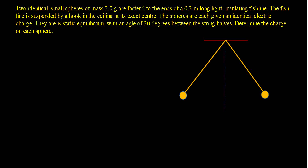In this video I will be solving a question related to Coulomb's law with the involvement of tension. We have two identical small spheres of mass 2 grams fastened to the ends of a 0.3 meter long light insulating fish line. The fish line is suspended by a hook in the ceiling at its exact center. The spheres are each given an identical electric charge and are in static equilibrium with an angle of 30 degrees between the string halves. The question asks us to determine the charge on each sphere.